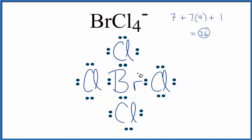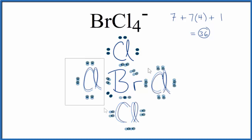For elements below period 3, row 3 on the periodic table, like bromine, they can have more than eight valence electrons. It's called an expanded octet. So we're going to put valence electrons here on the bromine. There's two, and then we'll put two up here. Let's clean this up a little bit. So now we've used all 36 valence electrons.